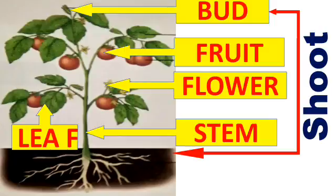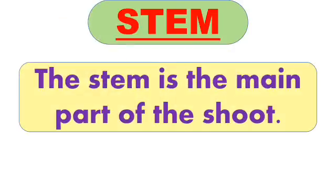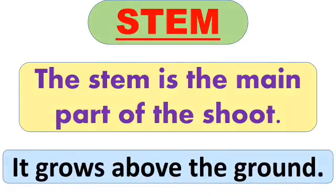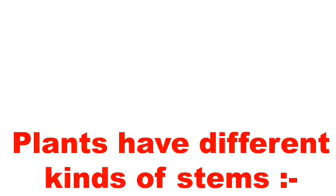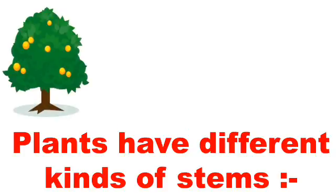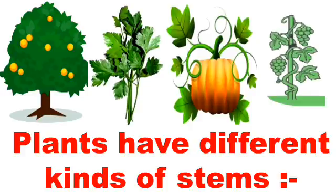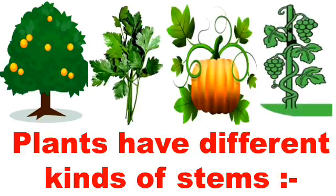Let's have a look at these parts of the plant one by one in detail. First is stem. The stem is the main part of the shoot. It grows above the ground. Plants have different kinds of stems. Plants are of many types like trees, shrubs, herbs, creepers, and climbers, and all these plants have different kinds of stems.